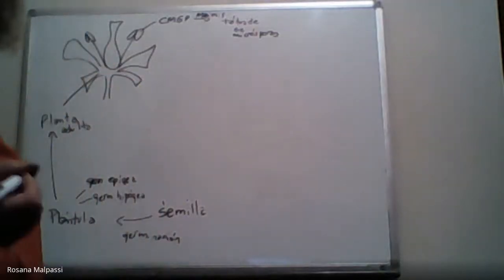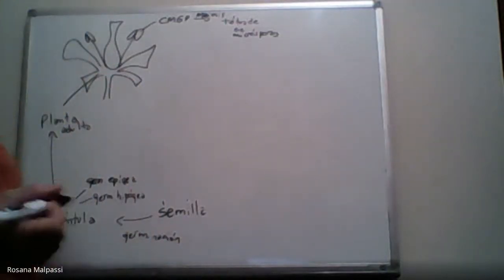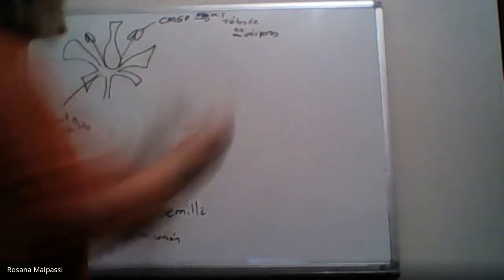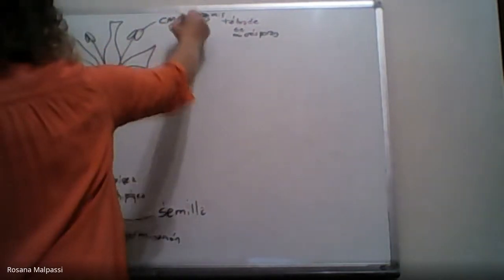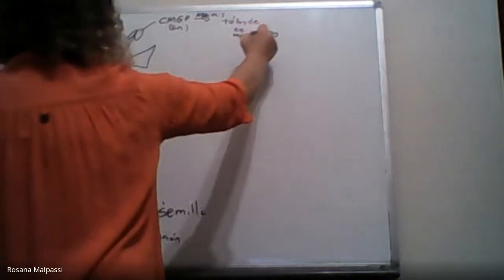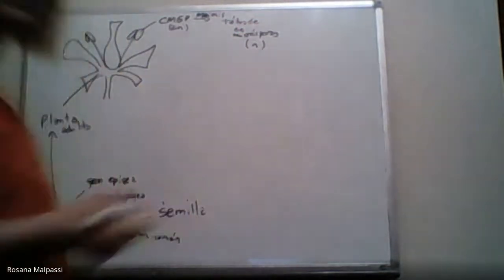Tengo meiosis ahí, ¿verdad? Van a sufrir meiosis y van a dar origen a las tétrades de microsporas. ¿Se acuerdan cómo se llamaba ese proceso? Células madres que eran 2n daban una tétrade de cada uno n. ¿Se acuerdan cómo se llamaba?